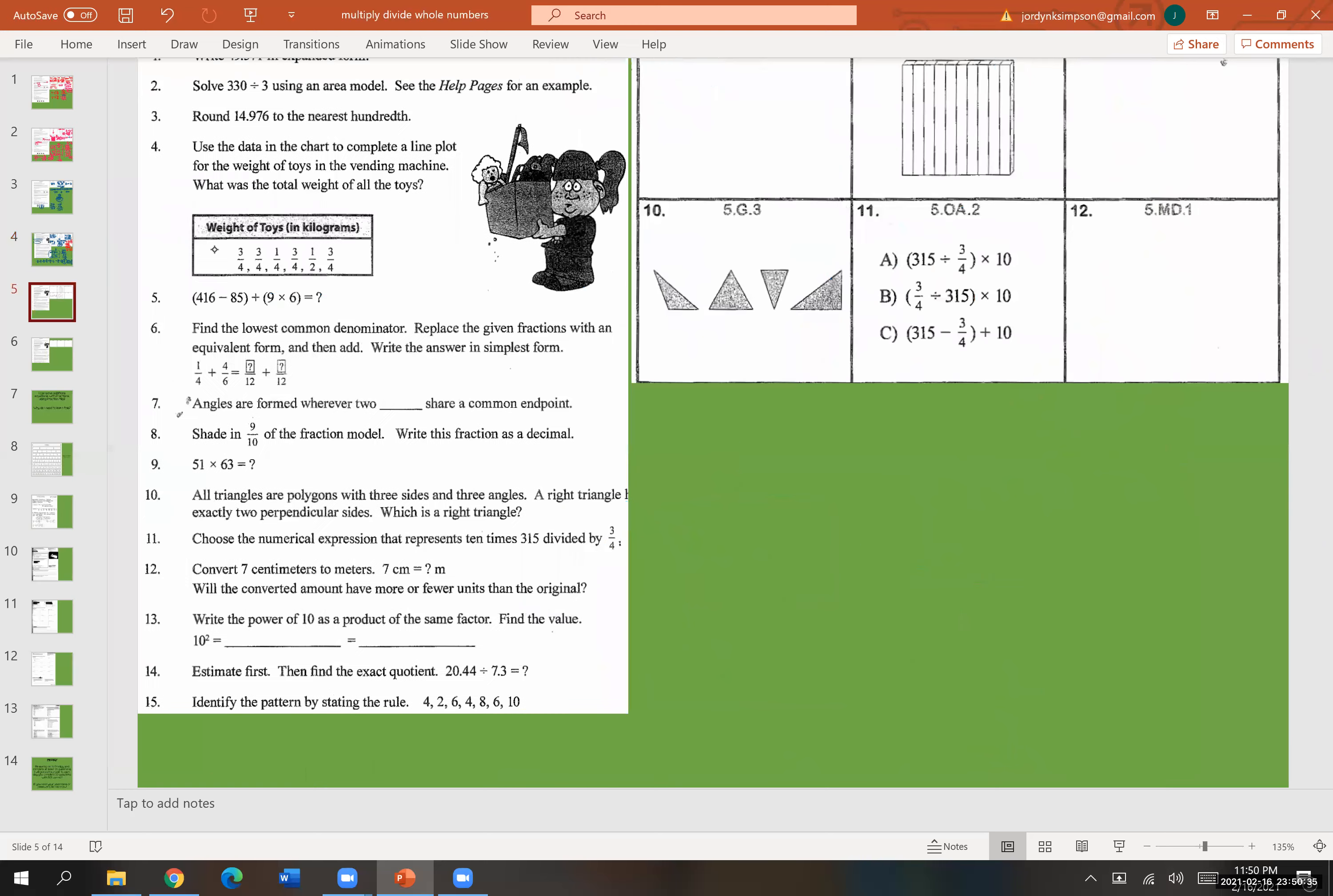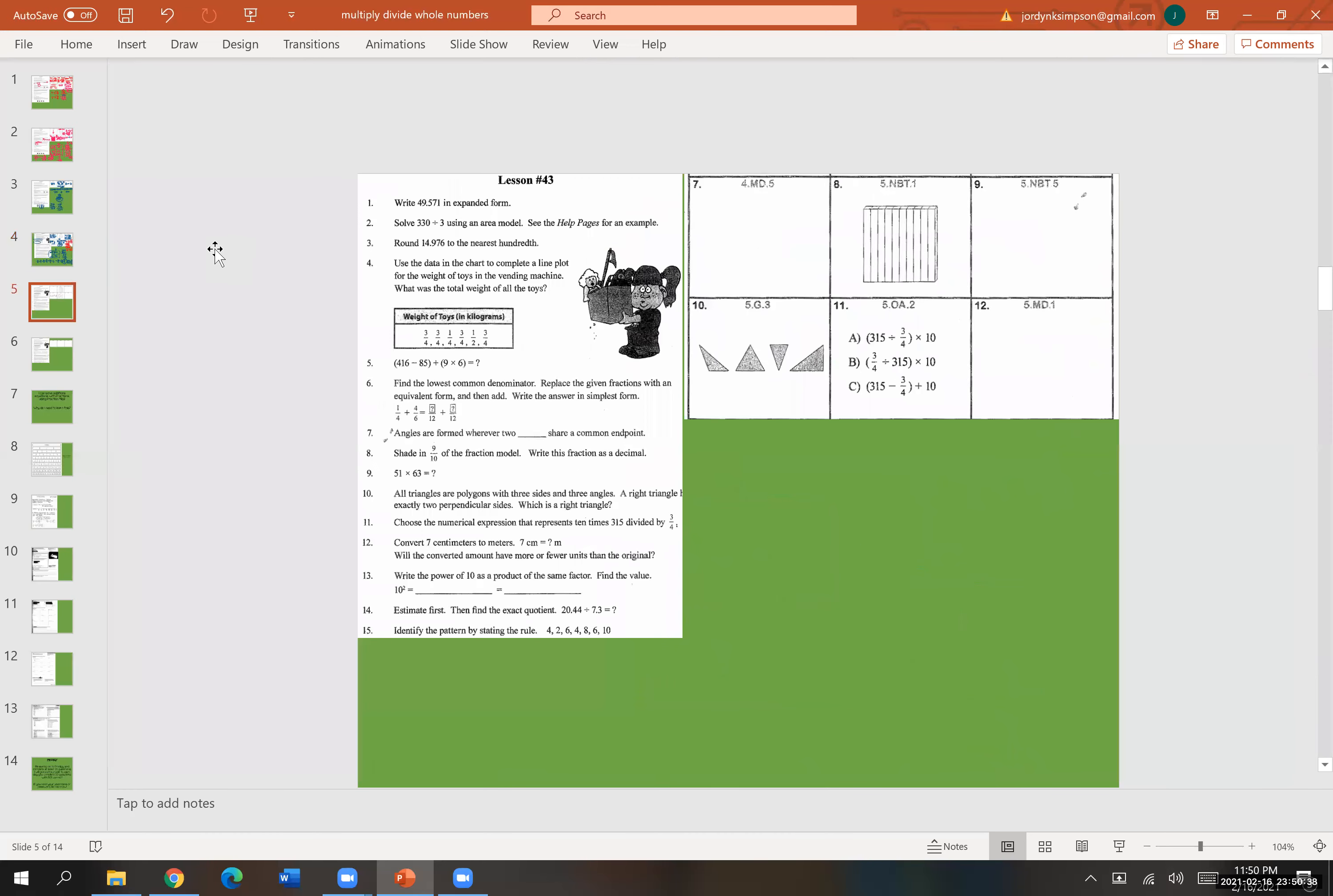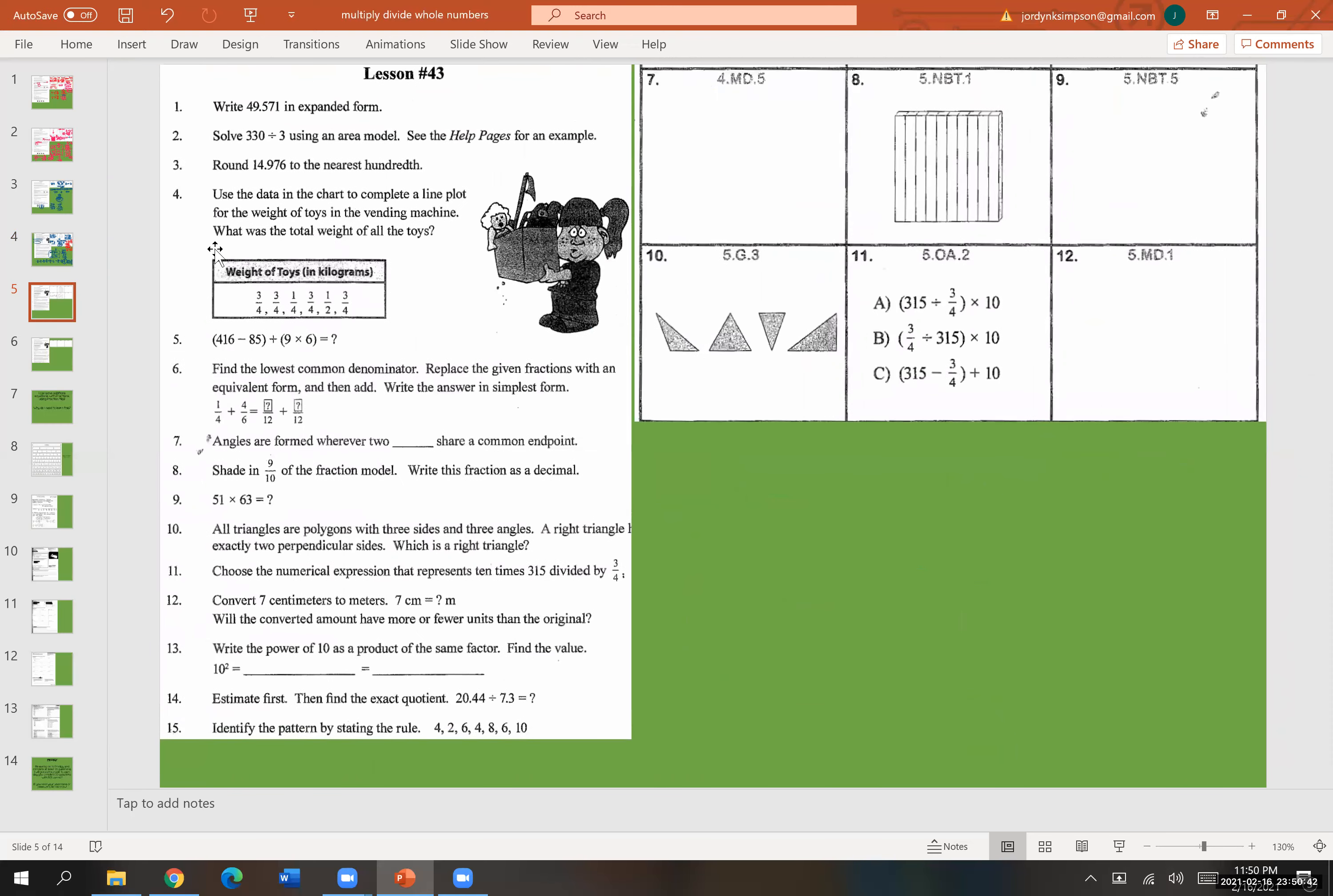All right, let's go ahead and do numbers seven through twelve. So number seven is angles are formed wherever two blank share a common endpoint. So if you do not know this, the key word in this is endpoint, because when we draw a line, there are two arrows on each end, which basically means both of those ends would go on and on and on. Neither one of them have an endpoint. But if you create a line that has an endpoint, which looks like a period or a decimal point at the end, these are called rays. So angles are formed wherever two rays share a common endpoint.